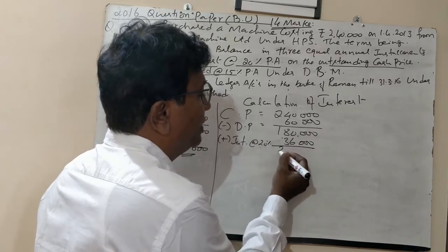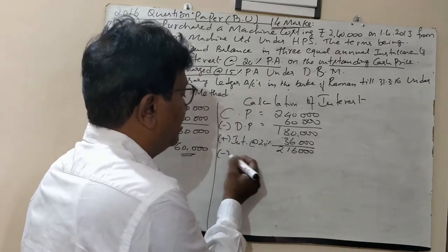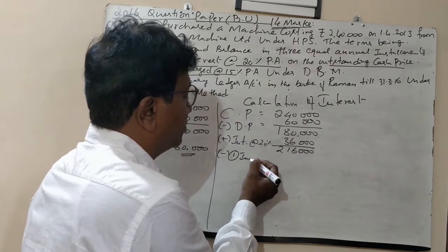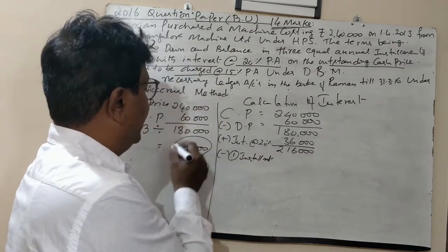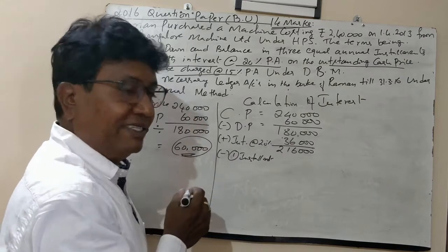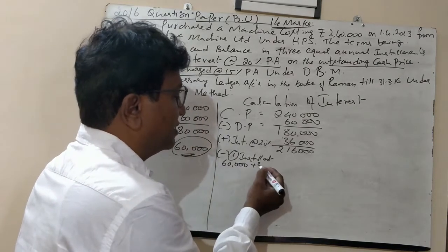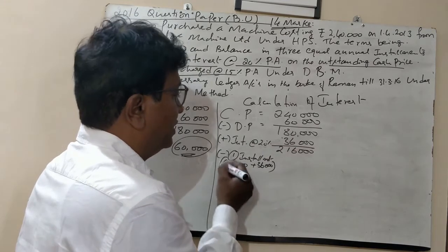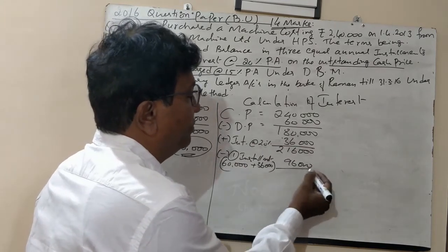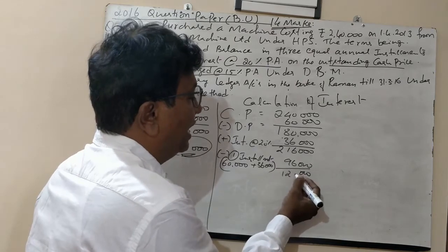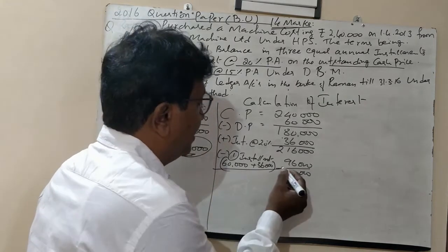So totally you need to pay ₹2,16,000. From this, deduct the first installment. The cash price of the installment is ₹60,000 and the interest for the first year is ₹36,000, giving a total of ₹96,000. After deducting that, you get ₹1,20,000. This is the balance at the end of the first year.